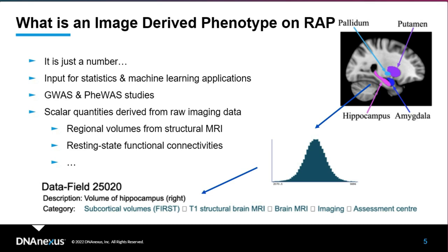These image-derived phenotypes are typically input for subsequent or advanced analysis — statistical analysis or machine learning applications. More specifically in life science, this could be GWAS or EWAS studies. Simply put, these are scalar values derived from raw imaging data. We have some available, but we can always compute more, which is the reason we are introducing new pipelines and tools.